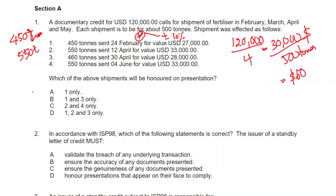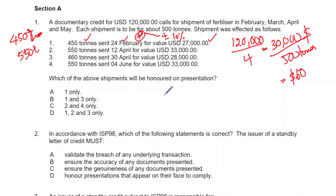So the very first shipment — 450 tons — is within the given tolerance band. It has been shipped during February, and the unit price of $60 is constant. 60 multiplied by 450 is $27,000 US dollars. So the first shipment can be honored as a complying presentation.